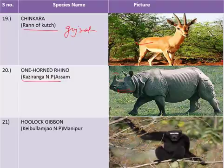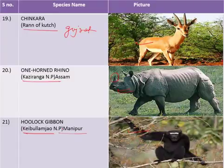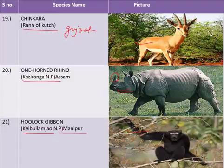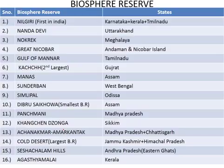The one-horned rhinoceros is the key species of Kaziranga National Park in the state of Assam. The Hoolock Gibbon is a key species of Keibul Lamjao National Park — the only floating national park of the world, situated in the state of Manipur. This is very important to keep in mind. Now let us move on to the important Biosphere Reserves of India.